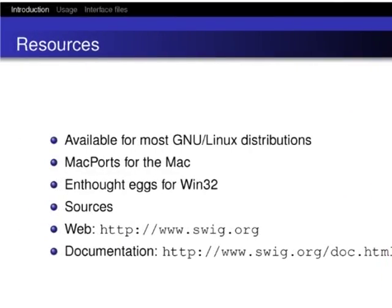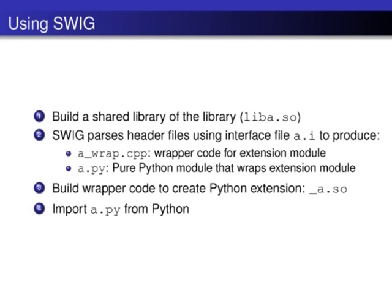So basically you have a C function and you can send it a numpy array — it's extremely convenient. SWIG is available on most Linux distributions, on Mac ports for the Mac, and nthotex builds are available for Win32. It's very well documented with a huge amount of documentation. So with all that done, how do you use SWIG?